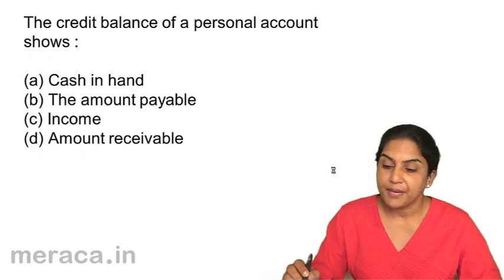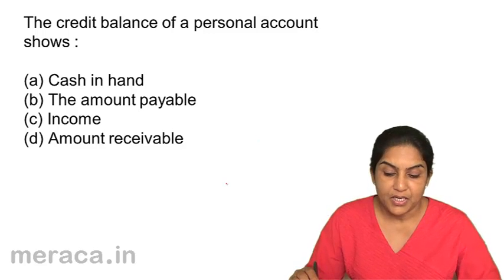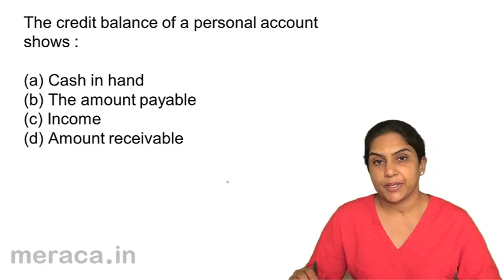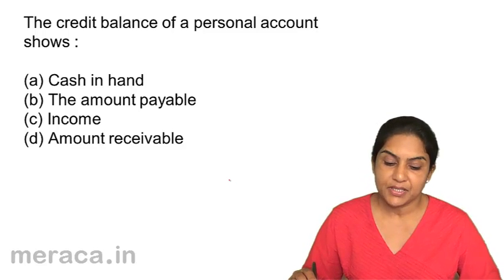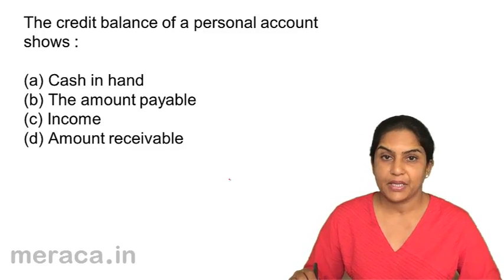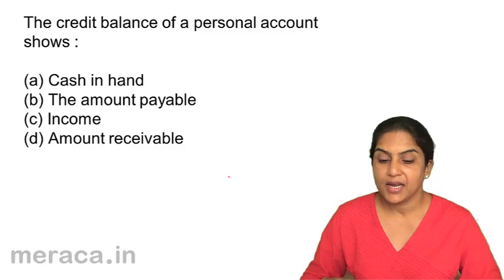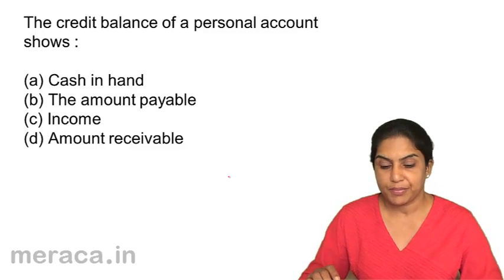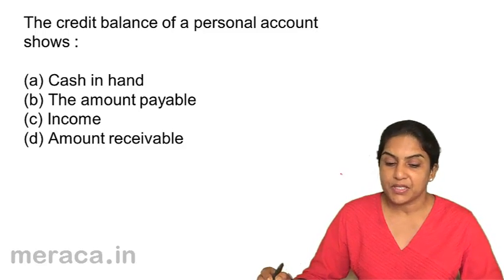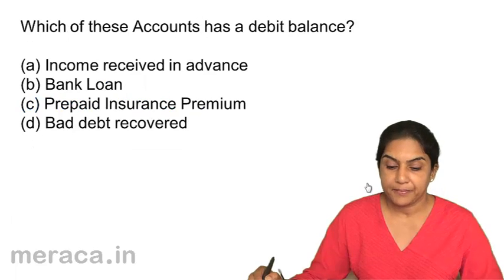Next: the credit balance of a personal account shows — A. Cash in hand, B. The amount payable, C. Income, D. Amount receivable. The credit balance in a personal account shows the amount payable. Credit balance is a liability. And the debit balance in a personal account will show the amount receivable. Please note: credit balance of a personal account will show the amount payable. Correct answer: B.